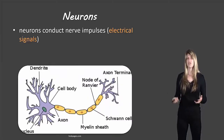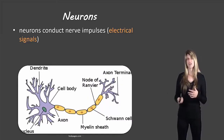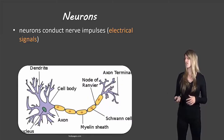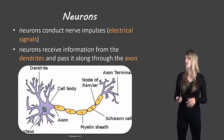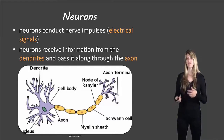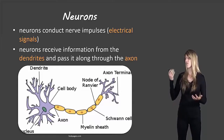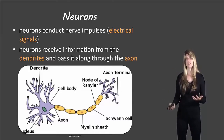Neurons conduct nerve impulses, which are actually electrical signals. They receive information from the dendrites and send it out through the axons.